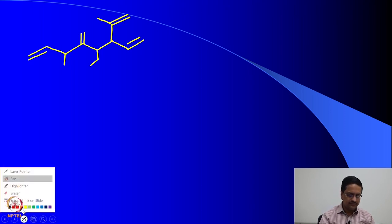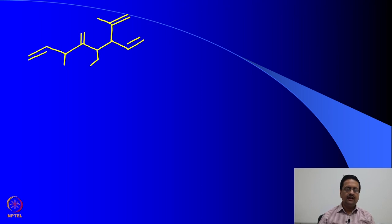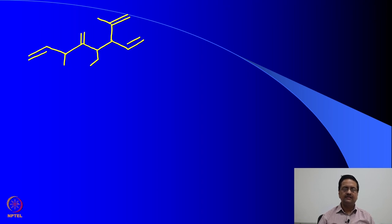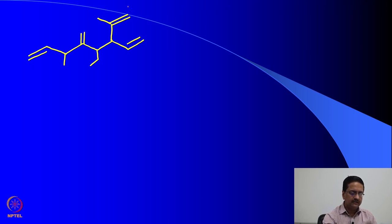The first point in this case would be to identify the longest chain, and we should identify the longest chain in such a way that the double bonds get the lowest numbering and we have the maximum number of branches. In addition, the substitutions should also have the lowest numbering. Considering all those points, the numbering should start from the carbon atom at the top right-hand corner, numbered 1, 2, 3, 4, 5, 6, 7 and 8.